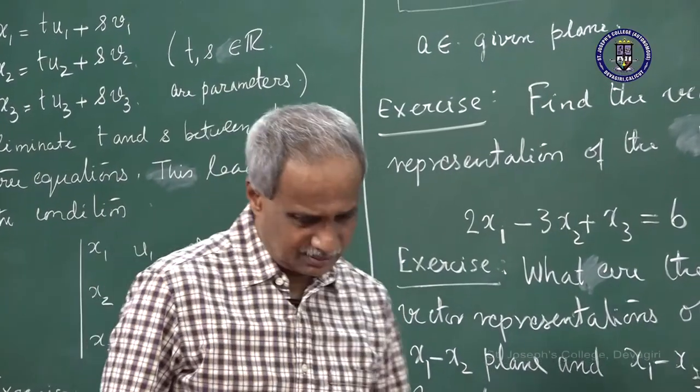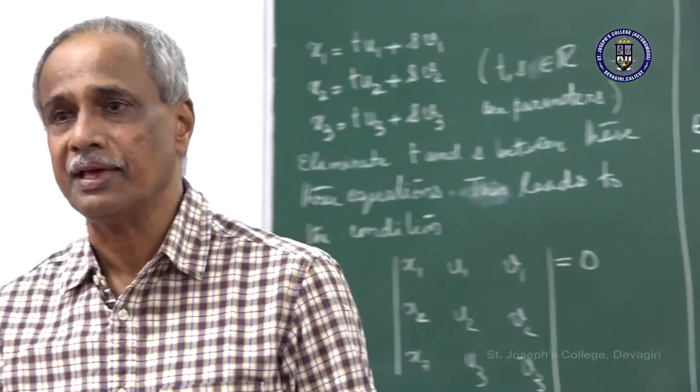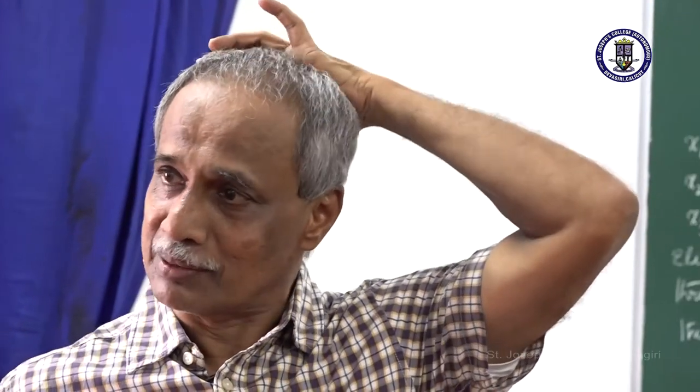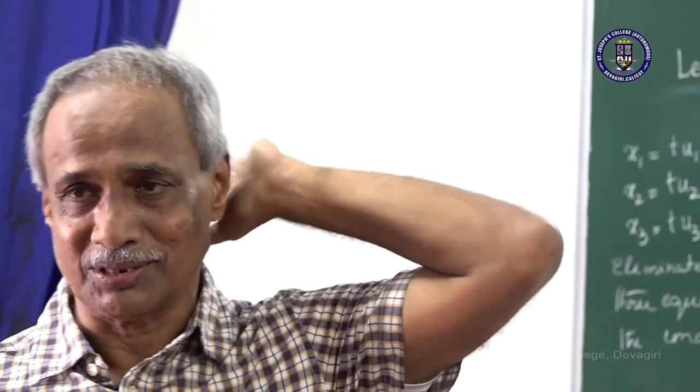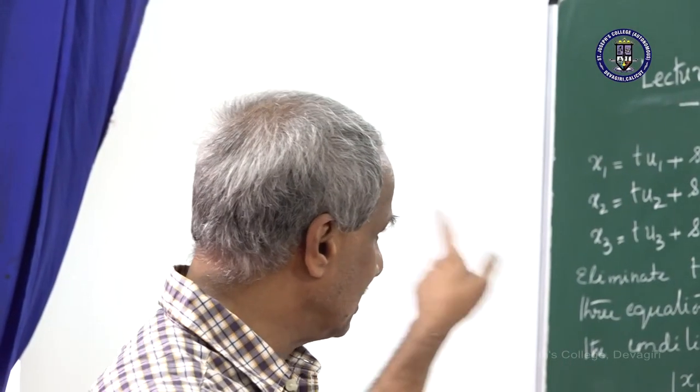Some exercises: get a feeling of this. What is the equation of the x1-x2 plane? It is x3 = 0. Similarly, the x1-x3 plane is x2 = 0. These are of the form A1·x1 + A2·x2 + A3·x3 = 0. Find the corresponding vector form and verify.